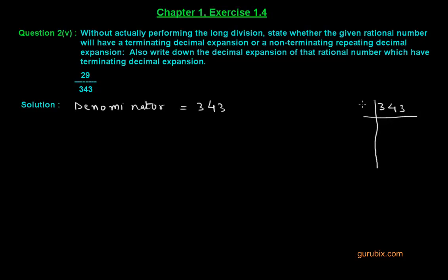We see that this number is divisible by 7 to get 49 as quotient. Now 49 is also divisible by 7, so we can write 343 as 7 into 7 into 7, or we can write it as 7 raised to 3.